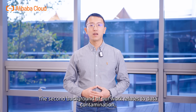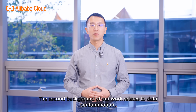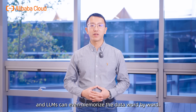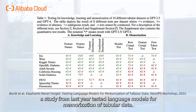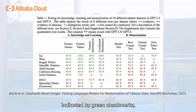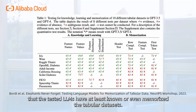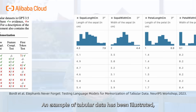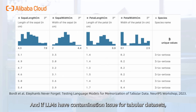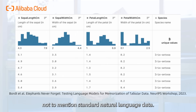The second background of our work relates to data contamination, which means the data has been consumed during training, and LLMs can even memorize this data word-by-word. A study from last year tested Large Language Models for memorization of tabular data, developed several tests, and found strong evidence — indicated by green check marks — that the tested LLMs have at least known or even memorized this tabular data. This should be especially concerning from a natural language perspective: if LLMs have contamination issues for tabular data, the problem is even greater for standard natural language data.